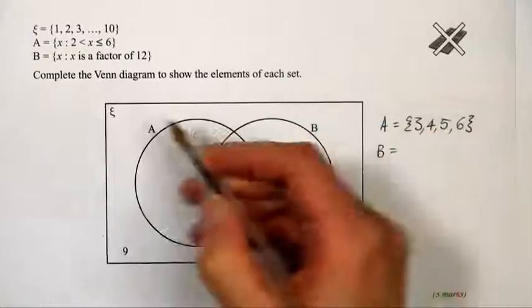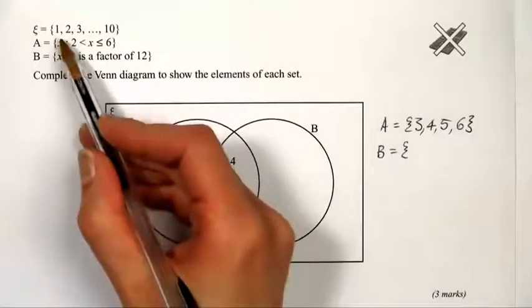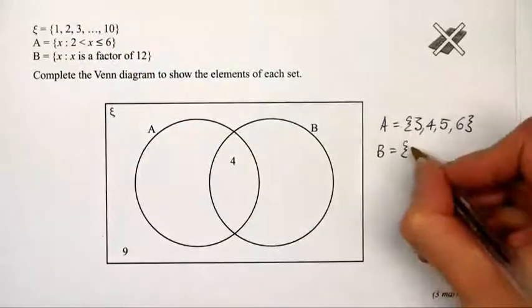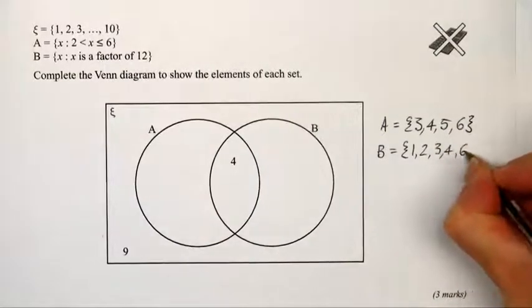Set B is basically factors of 12, but because the universal set only goes up to 10, we won't include 12 itself. So it's 1, 2, 3, 4, and 6.